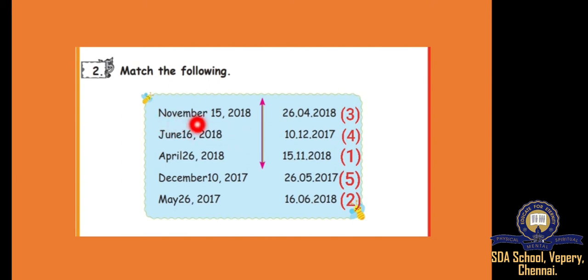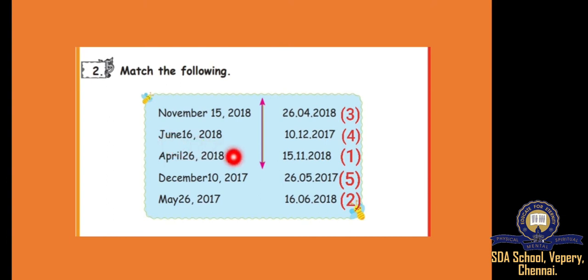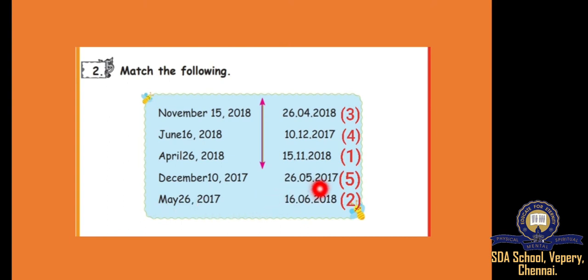See here, November 15th 2018 — November means which month? January is 1, February is 2, in that way November will be 11. So 15-11-2018. Next, June — June month is 6, so 16-6-2018. Next, April — April is 4, so 26-4-2018. Next, December — December is 12, so 10-12-2017. Next, May — May is 5, so 26-5-2017. We have discussed this in Zoom class and in the last class also.